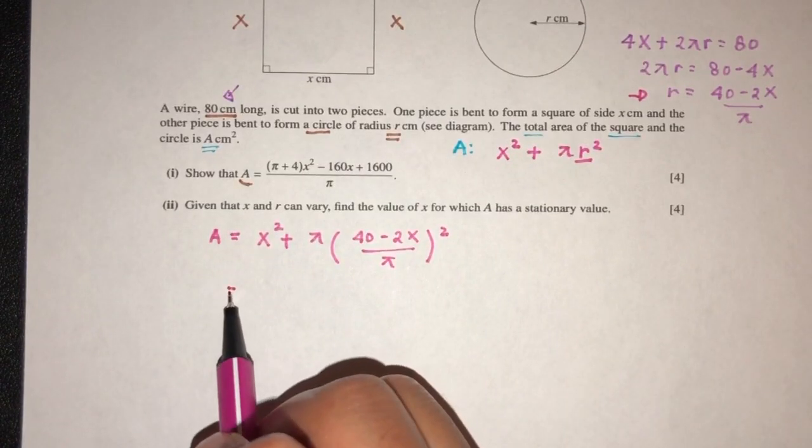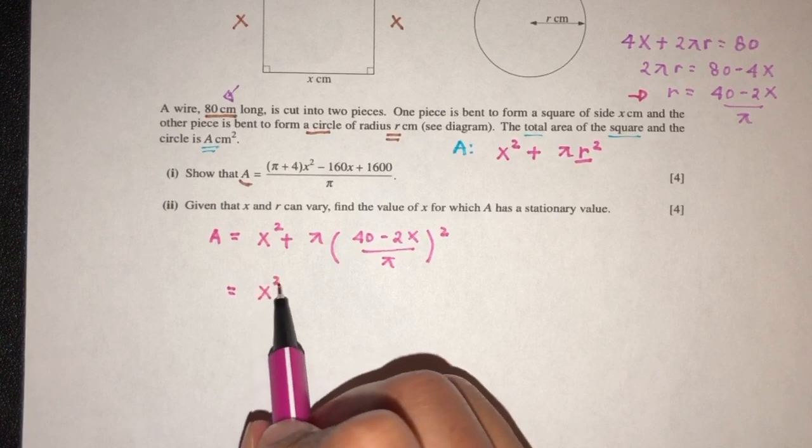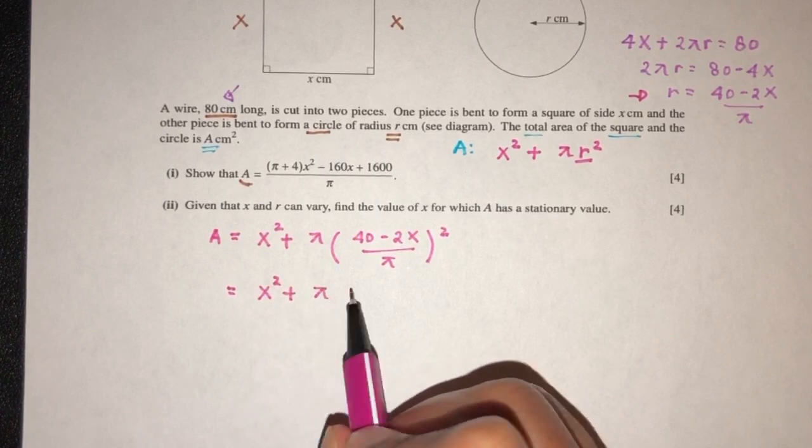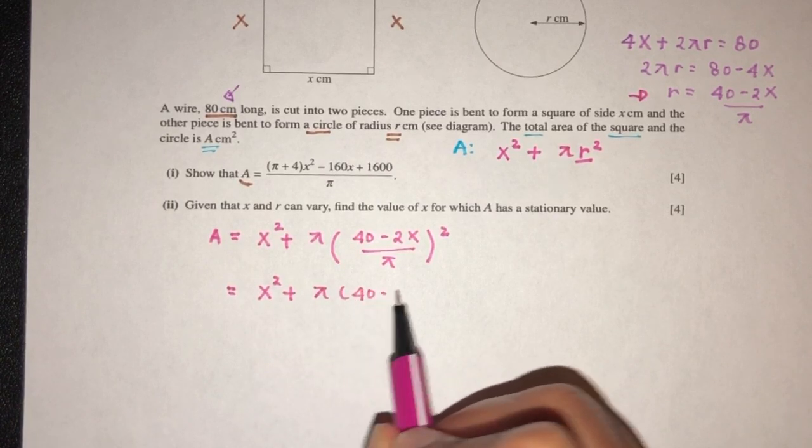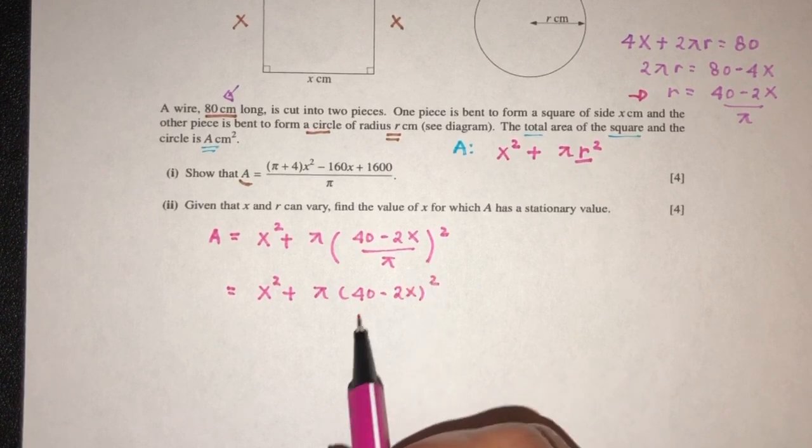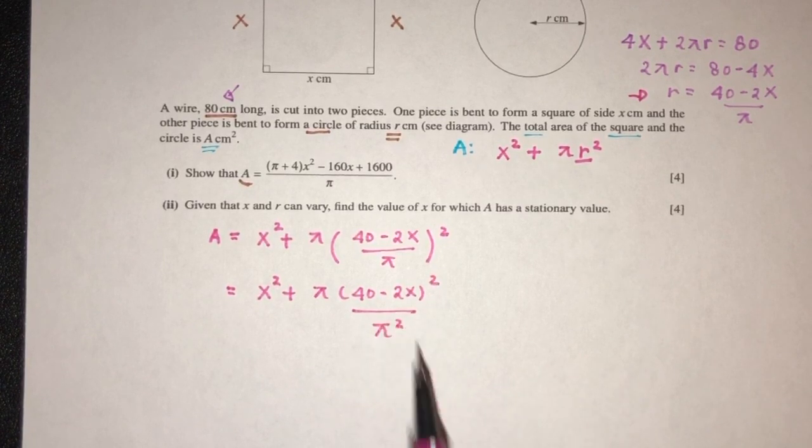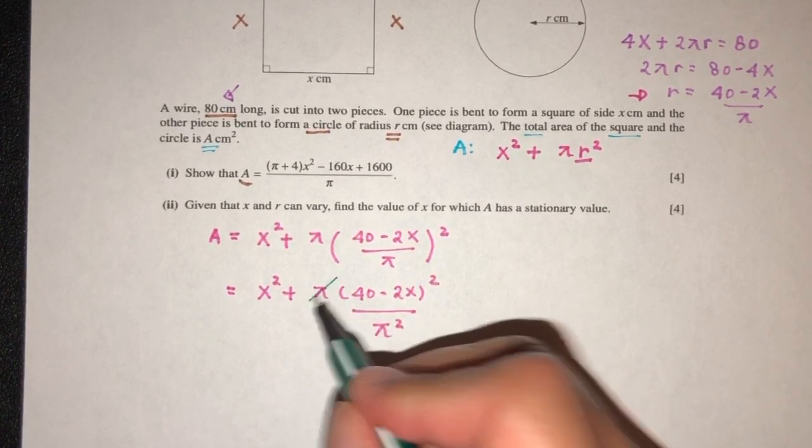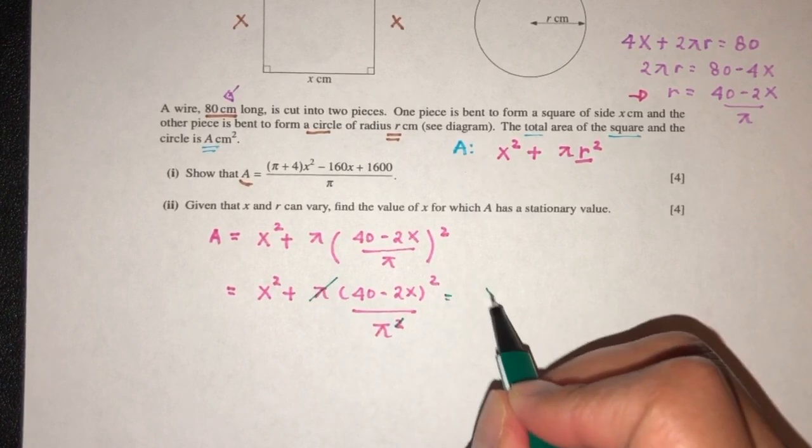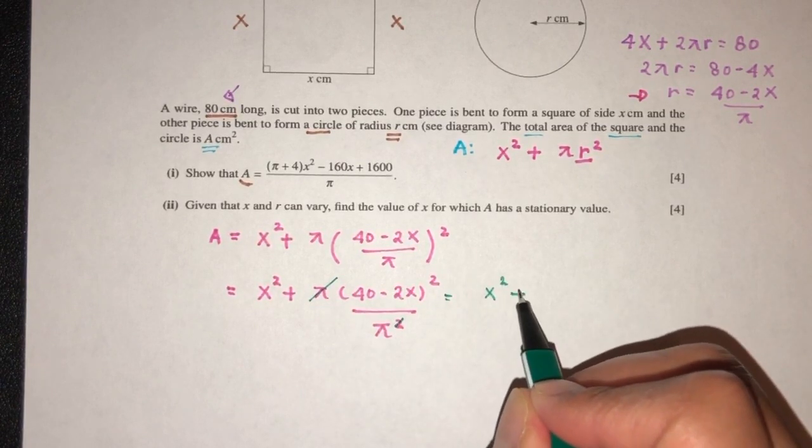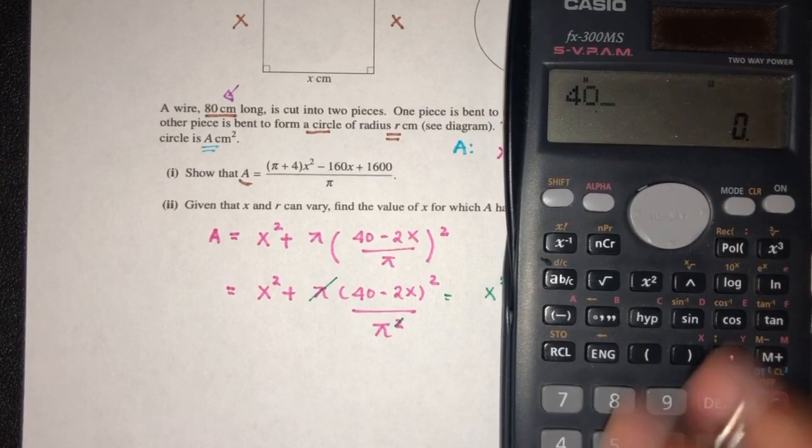Simplify. That will be x square, π, and that will be 40 minus 2x square over π square. So this and this will cancel out. And here we will have x square plus the value of, so here we have 40 square, that will be 1600